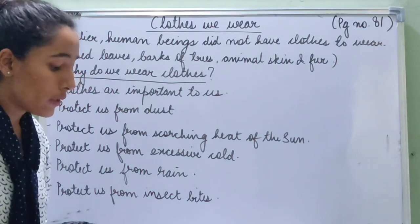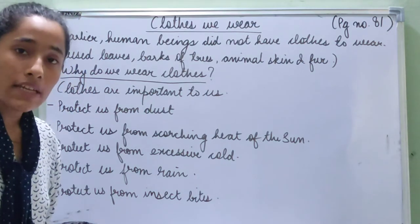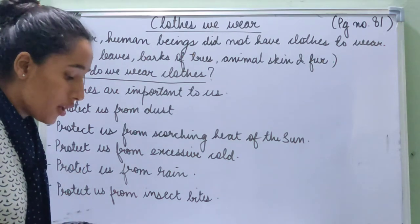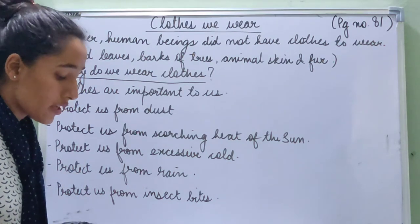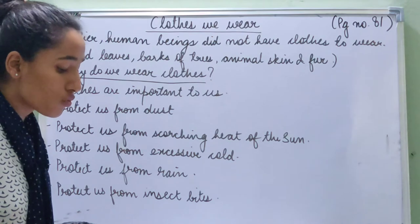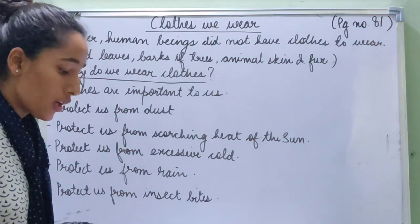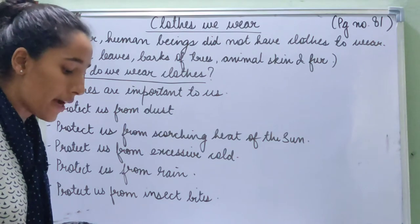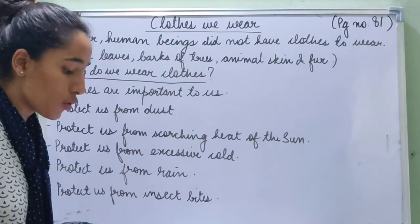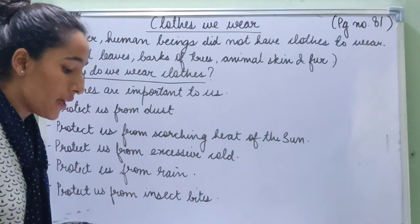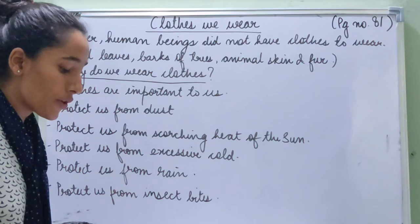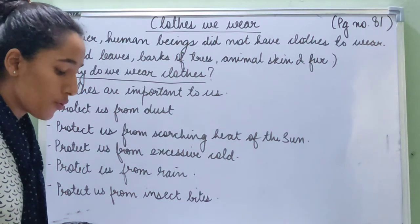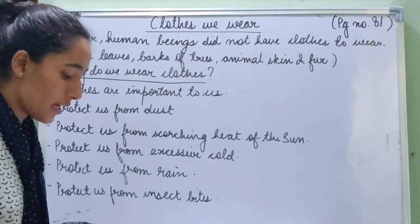Now, why do we wear clothes? Clothes are important to us. We need clothes to cover our body. Clothes protect us from dust, heat, cold, rain, and insect bites. If we wear the same clothes for long hours, they become dirty because the dust present in our surroundings settles on them. This shows that clothes protect us from dust.